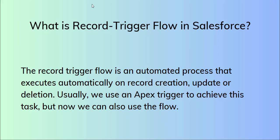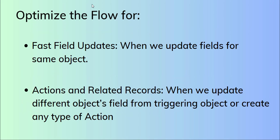Usually we use an Apex trigger to achieve this task, but now we can also use flows. There are two options available in the flow: one is fast field updates and the second is action and related records. In the previous example we used fast field updates — when the opportunity amount is greater than 10K, the opportunity stage should automatically convert to Closed Won, meaning we updated a field on the same object.